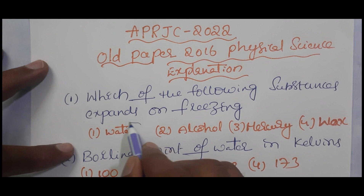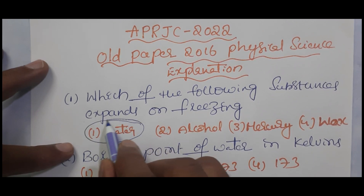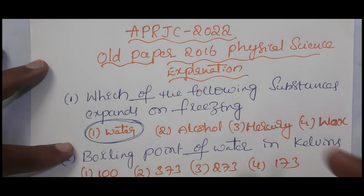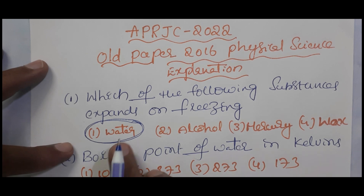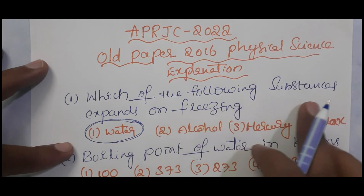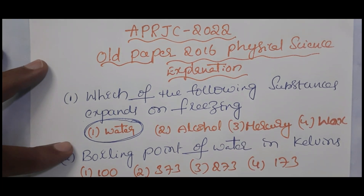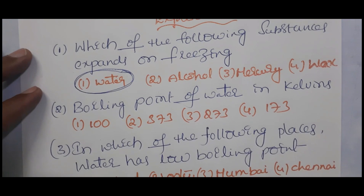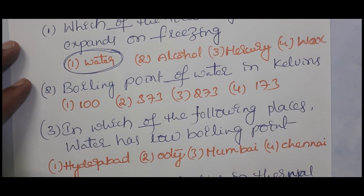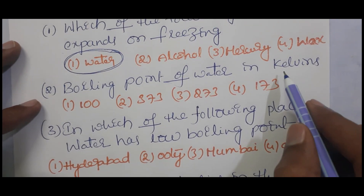On freezing, the volume of water increases. That is why water has a lower density in its solid state — solid water has a lower density than liquid water because while freezing, volume increases and density decreases. So the answer is water. Expands on freezing means water is the answer.